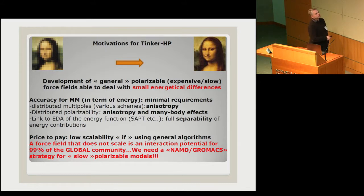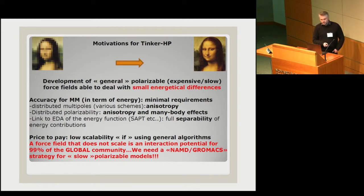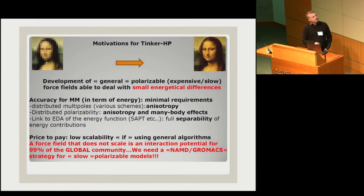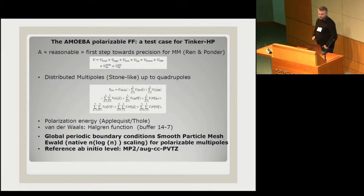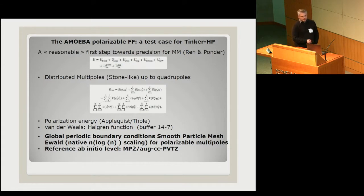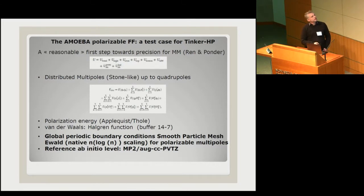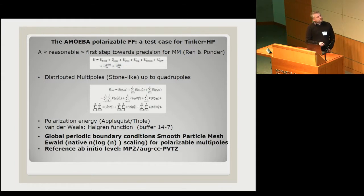The problem was the scalability of these models. The difference between a force field widely used by a community and just another interaction potential model is really small — if you don't scale, nobody will use your model. We needed a full framework to really speed up these slow polarizable models. As a proof of concept, since we are working on the Tinker software where the AMOEBA force field was born, we tried to speed up this technology using AMOEBA — it has distributed multipoles, polarization, and all the framework to do periodic polarizable conditions.